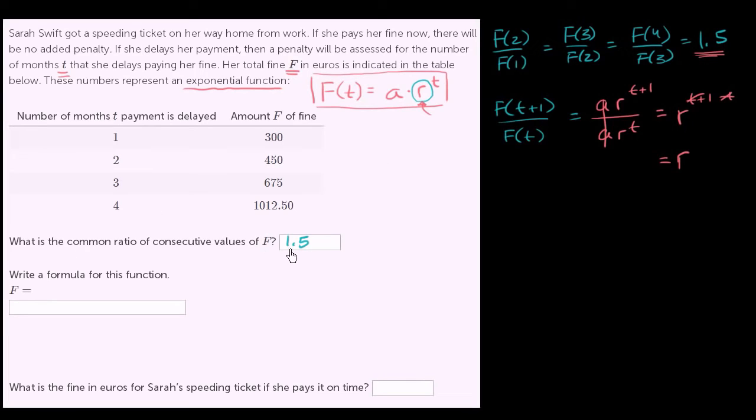So when we figured out that the common ratio is 1.5, that tells us that our function is going to be of the form f of t is equal to a times 1.5 to the t power. Write a formula for this function. Well, we've almost done that, but we haven't figured out what a is.